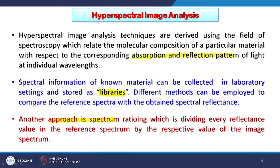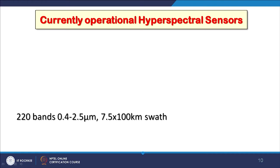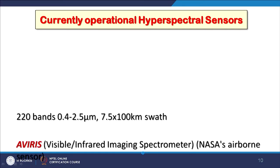Another approach is spectral ratioing — when we go for ratioing we reduce the number of bands and get indices like band ratios or vegetation index. Dividing every reflectance value in the reflectance spectrum by another band — if we have 100 bands and create ratios among them we may end up with 50 bands — makes things much easier to handle.